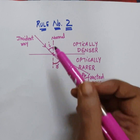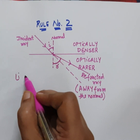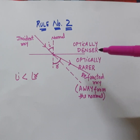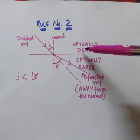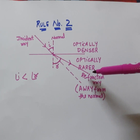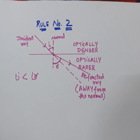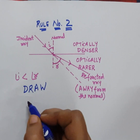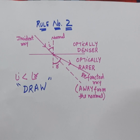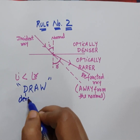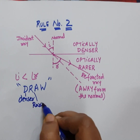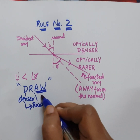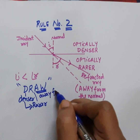Over here we can observe that angle i is smaller than angle r. Rule number two: the incident ray will move away from the normal when it travels from optically denser medium to optically rarer medium. To remember this, use the trick DRAW — D stands for denser, R stands for rarer medium, so whenever the light ray travels from denser to rarer medium, it will move AW, meaning away from normal.